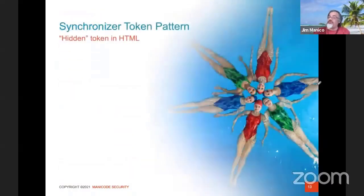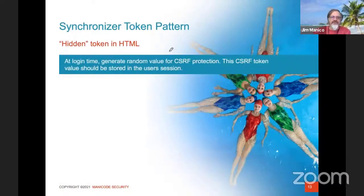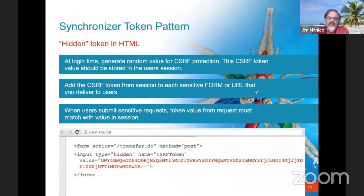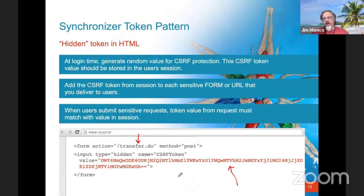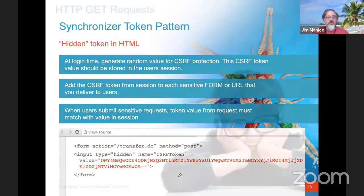For traditional stateful web apps, when you log in, generate a large CSRF token. When rendering a form, extract that token from the session and put it in the form as a hidden variable for any sensitive transaction. When submitted, compare the token in the form to what's in your session — if they match, you've passed the CSRF test; if not, reject the request. This is built into most modern web frameworks, so use what your framework offers first. And your GET requests should not run transactions.